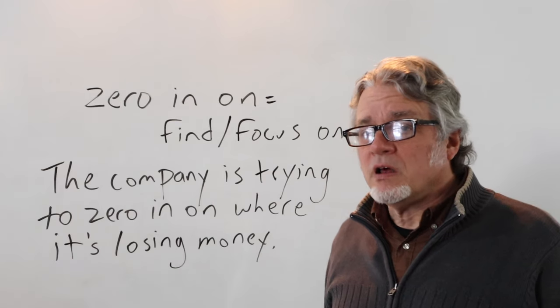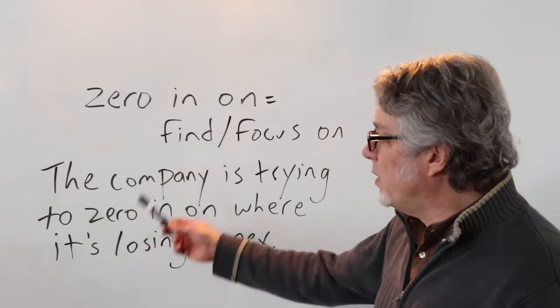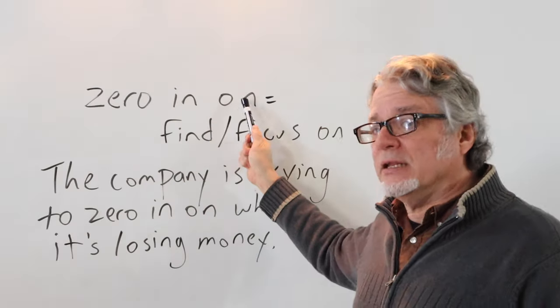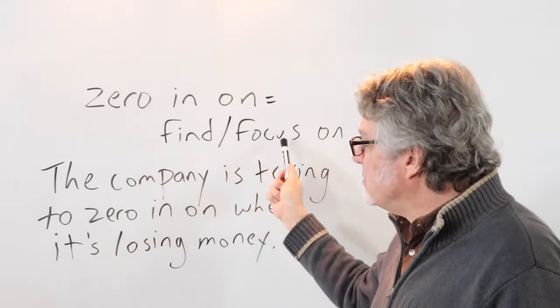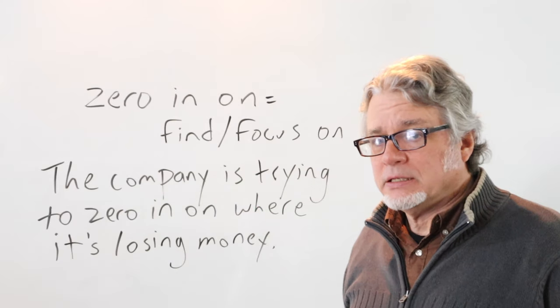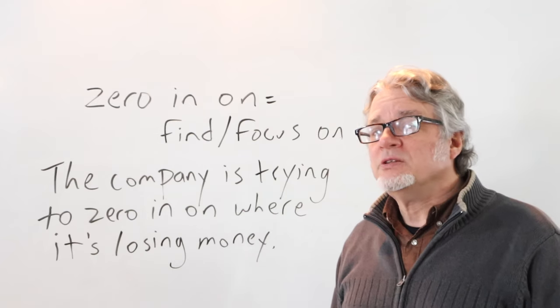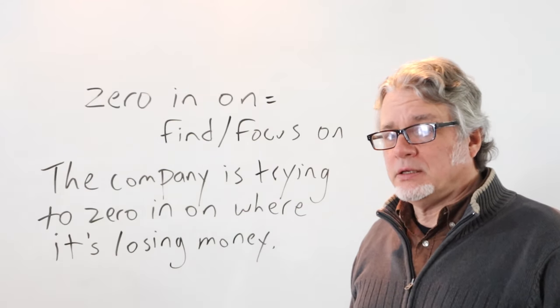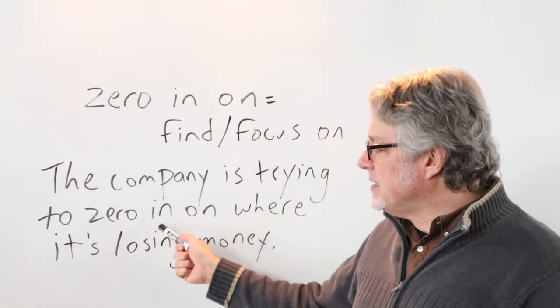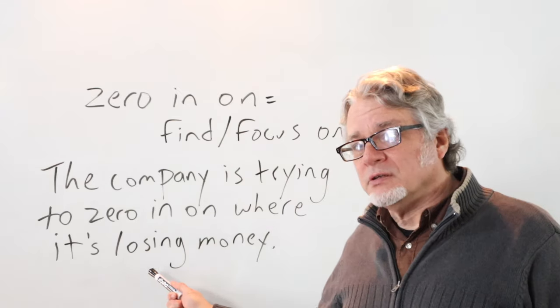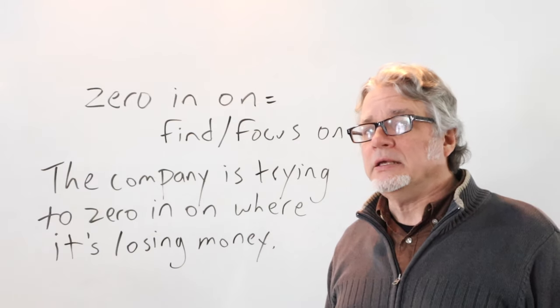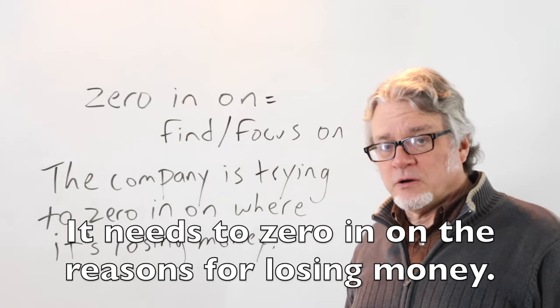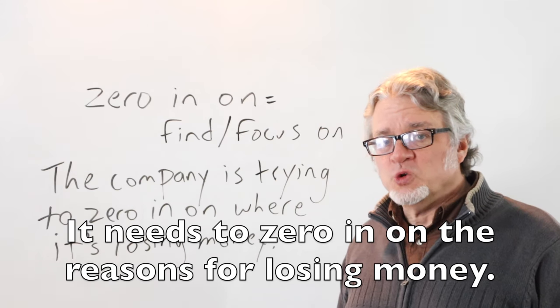Zero is part of a phrasal verb when zero is a verb: zero in on, which means to find or focus on. The company is trying to zero in on where it's losing money, so it needs to find the reason why it's losing money. It needs to zero in on the reasons for losing money.